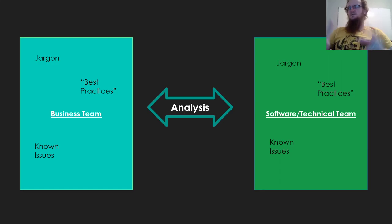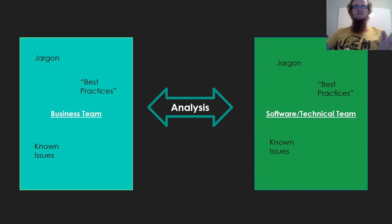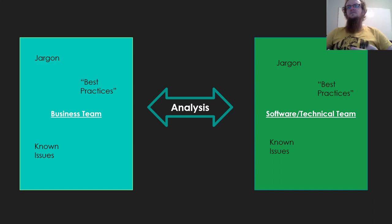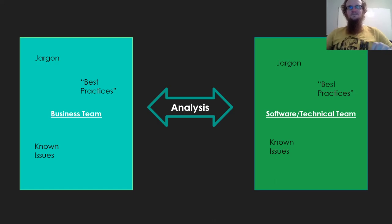Things you have to deal with include the fact that both teams have their own jargon — you'll have to bridge the gap between terminology using vocabularies or dictionaries. They also have their own best practices, which can cause confusion in meetings when you conflate banking best practices with best practices for implementing a banking system. They also have their own sets of known issues, and combining a cutting-edge technology with known issues to support a convoluted business process also with known issues is a high-risk situation.